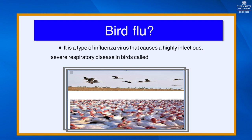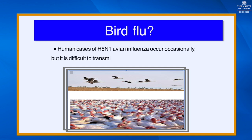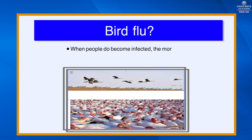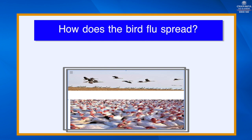Bird flu is a type of influenza virus that causes a highly infectious, severe respiratory disease in birds, called avian influenza or bird flu. Human cases of H5N1 avian influenza occur occasionally, but it is difficult to transmit the infection from person to person. When people do become infected, the mortality rate is about 60 percent.